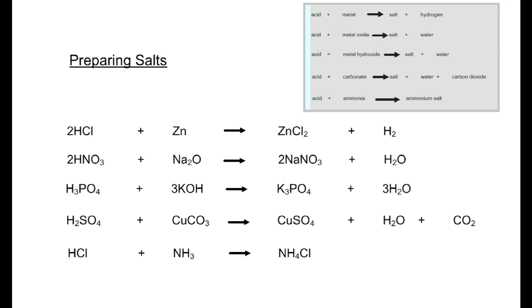So chlorides, nitrates, phosphates, and sulfates must be made from hydrochloric acid, nitric acid, phosphoric acid, and sulfuric acid, respectively. If we look at this last case again, we have ammonium chloride that is formed. So if it's a chloride salt, we need hydrochloric acid to produce it.